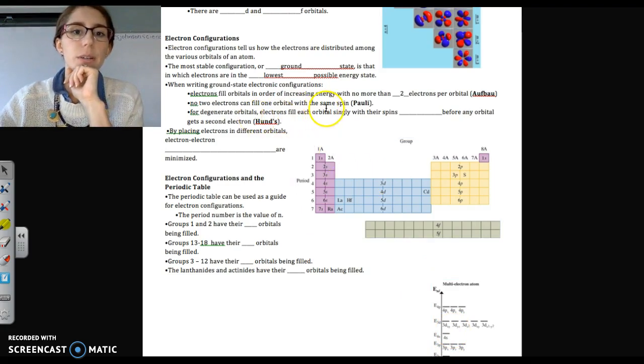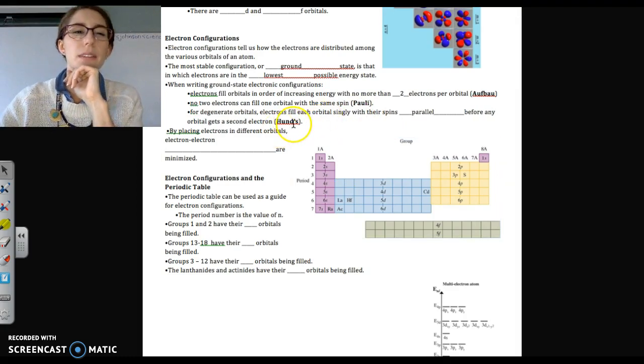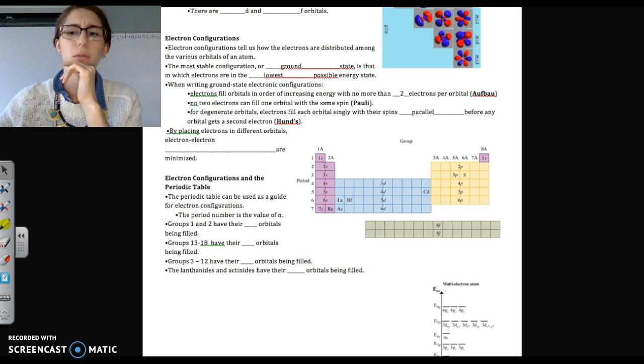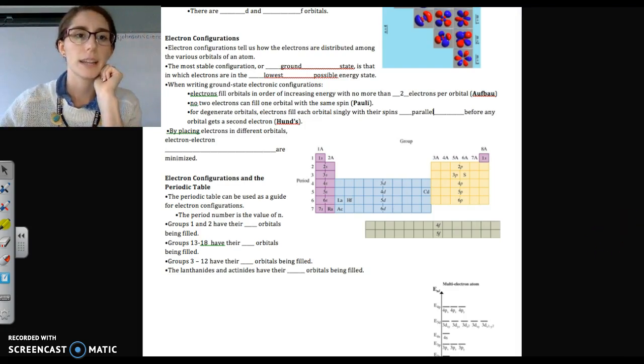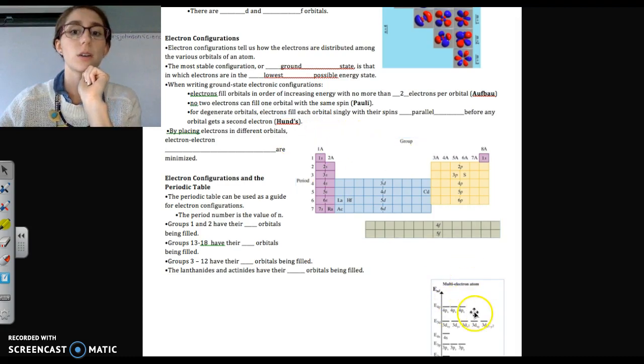For degenerate orbitals, electrons fill each orbital singly with their spins parallel before any orbital gets a second electron. That's Hund's rule. Remember, it's kind of like an orbital you can think of almost as its bedroom or something. The electrons are going to want their own space, and they don't want to share until they're actually forced to. So I think last year in my honor chemistry class, I called them, we were talking about like a hotel analogy in beds.